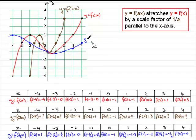So this is the graph of y equals f of a half x. The a value is a half, so the scale factor is 1 divided by half, which is 2.